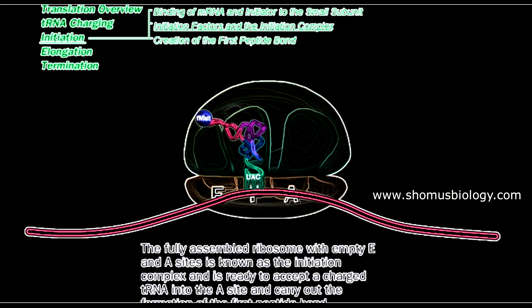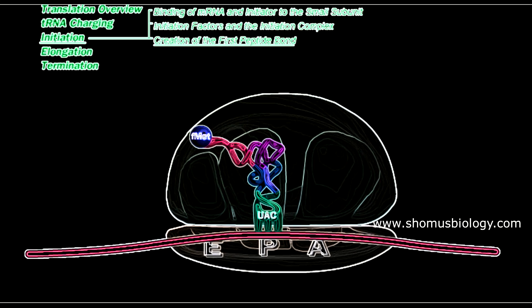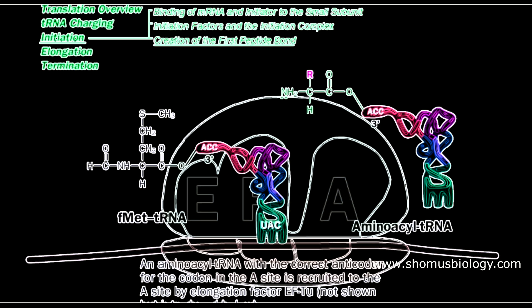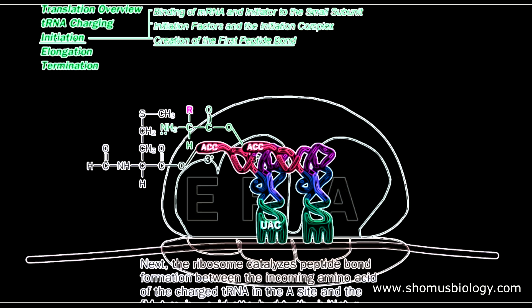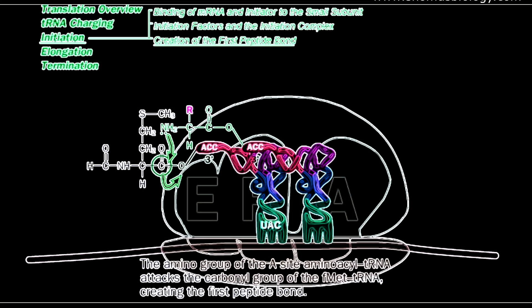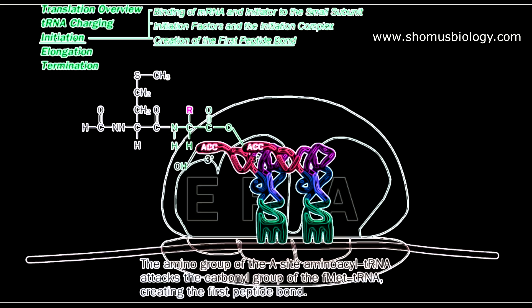Elongation now begins. Depending on the codon present in the A site, a charged tRNA brings the specific amino acid to the A site, binding via its anticodon loop. Then the first peptide bond forms through a nucleophilic attack: the lone pair of electrons on the NH2 attacks the carbonyl carbon. As a result, the formylated methionine is transferred from the tRNA of the P site to the tRNA of the A site.